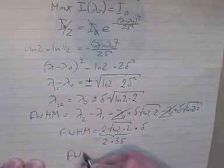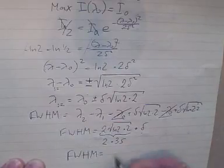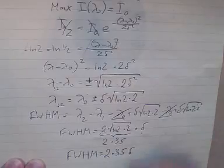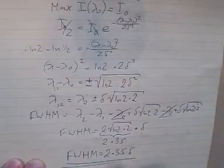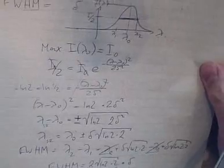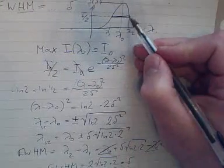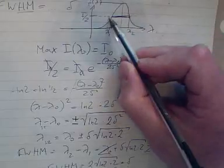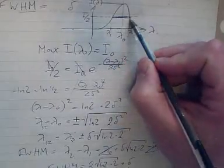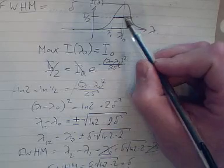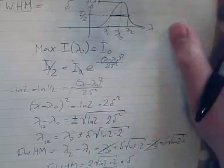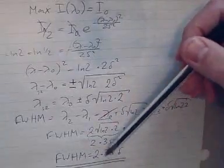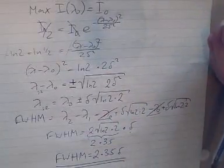So the full width at half maximum relates to delta by a factor of 2.35, which makes sense if you remember that delta is something closely linked to standard deviation. The full width at half maximum is the full width, so it's going to be definitely a factor of two larger, if not maybe even three. We've calculated that the full width at half maximum is 2.35 times delta.